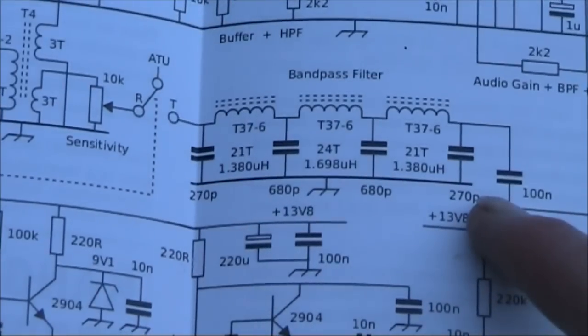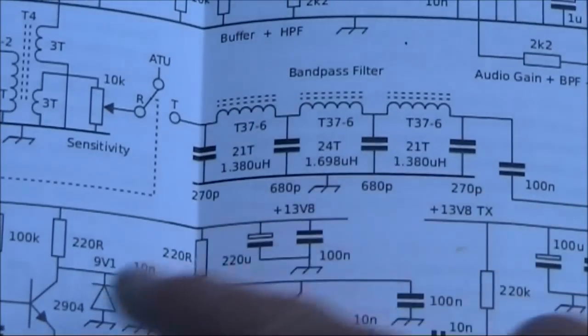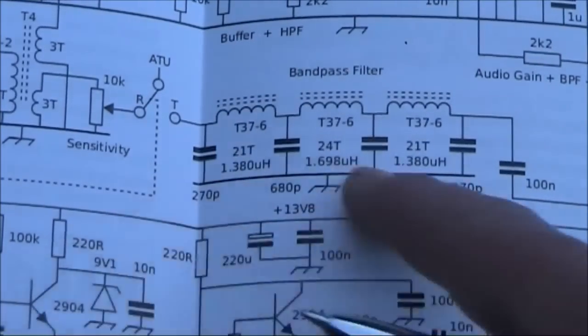Here we have the transmit low pass filter, probably cuts off at about 8 megahertz, so it's okay for a 7 megahertz rig as described.